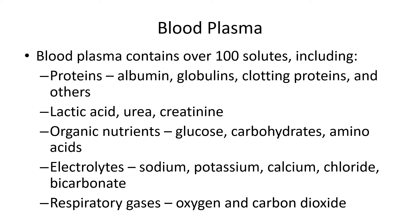We also have toxic waste materials that need to be removed. Lactic acid and lactate will be converted by the liver into sugar. Urea and creatinine are other toxic products that need to be removed by the kidneys. We have nutrients absorbed through the small intestine — glucose, disaccharides, other carbohydrates, and amino acids. We have electrolytes — mainly ions of sodium, potassium, calcium, etc. — needed by nerve cells and muscle cells. We also have respiratory gases: oxygen to be transported to tissues, and carbon dioxide to be removed.